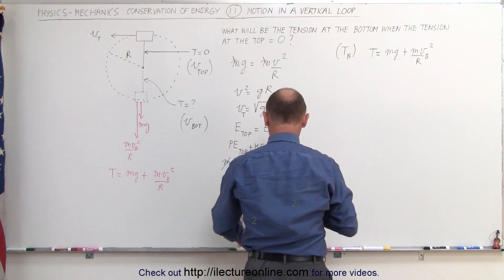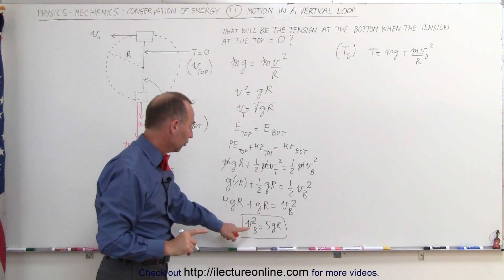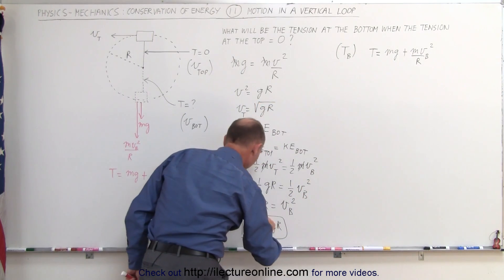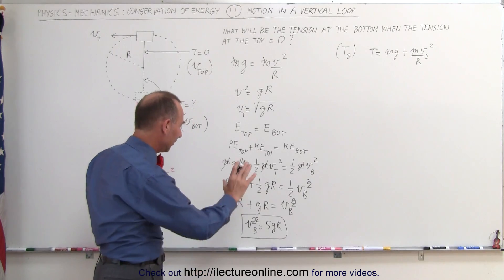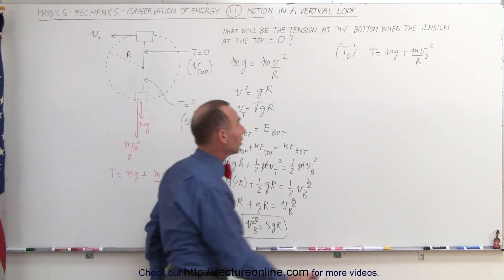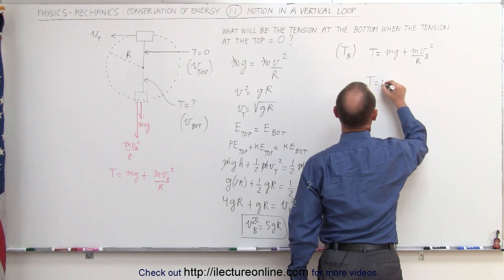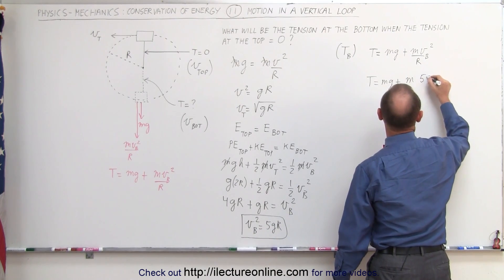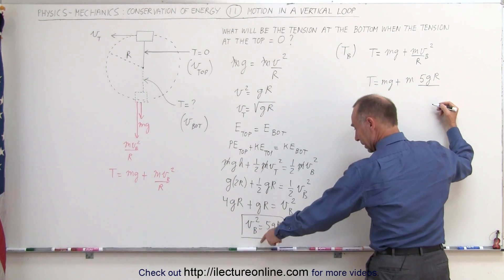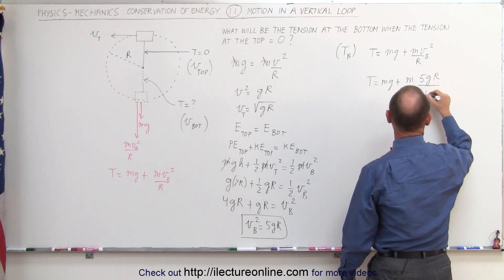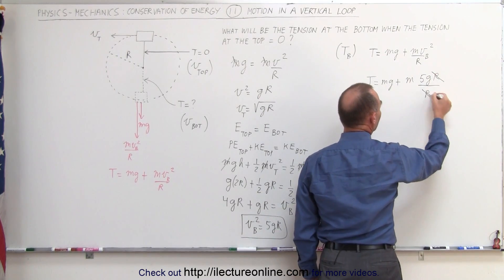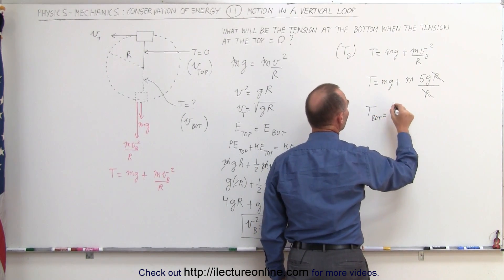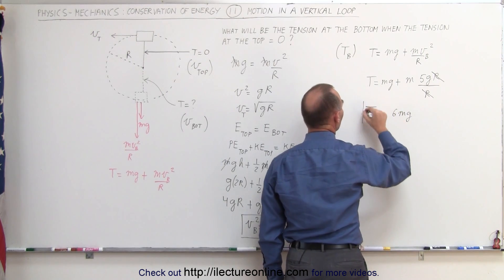The tension on the string equals the weight of the object plus the force required to keep the centrifugal motion going: mv_b² over r. Now v_b² equals 5gr, so the tension equals mg plus m times 5gr divided by r. The r's cancel, and we have mg plus 5mg. Therefore, the tension at the bottom is equal to 6 times the weight of the object.